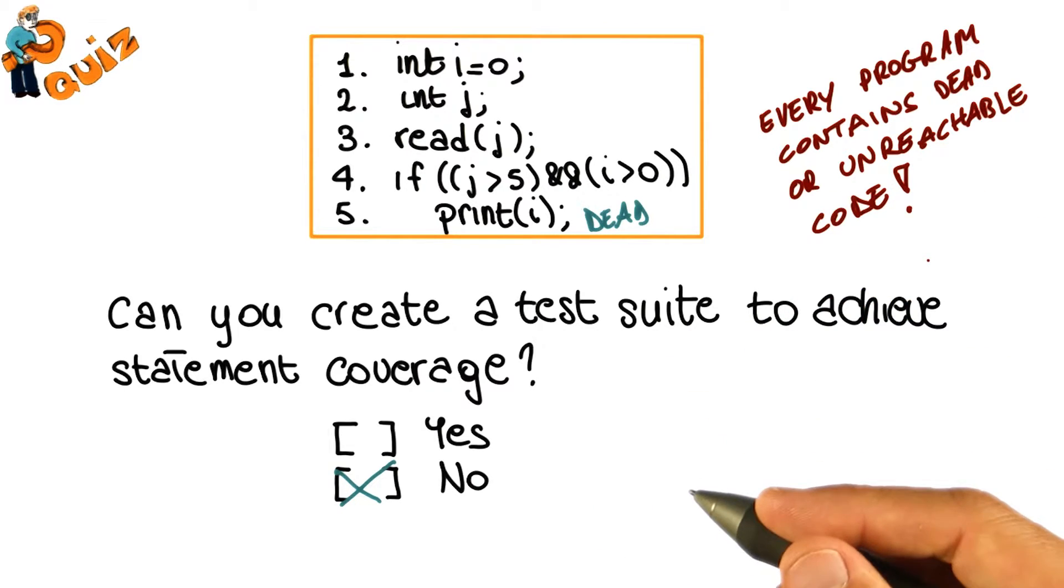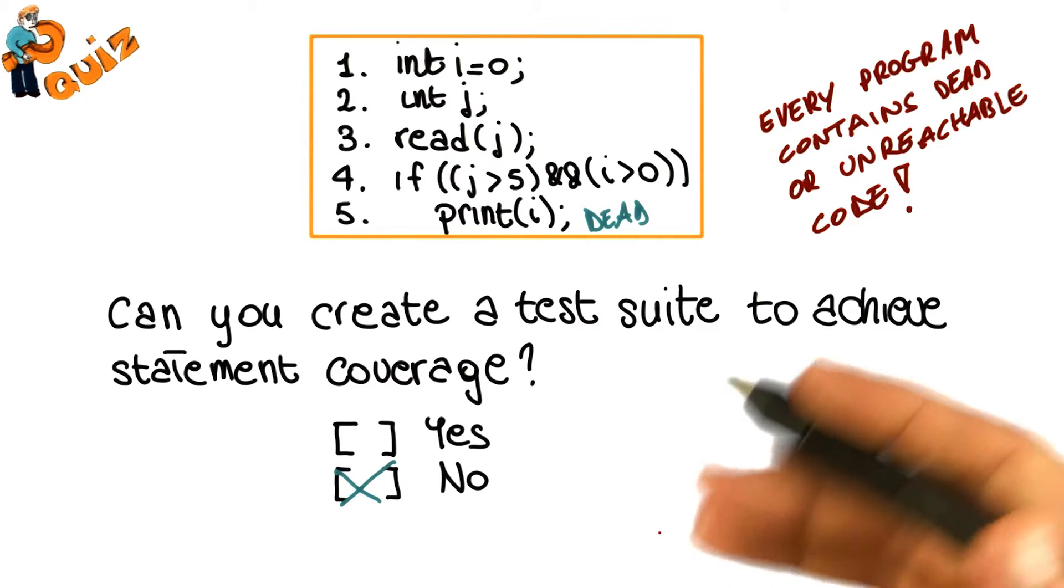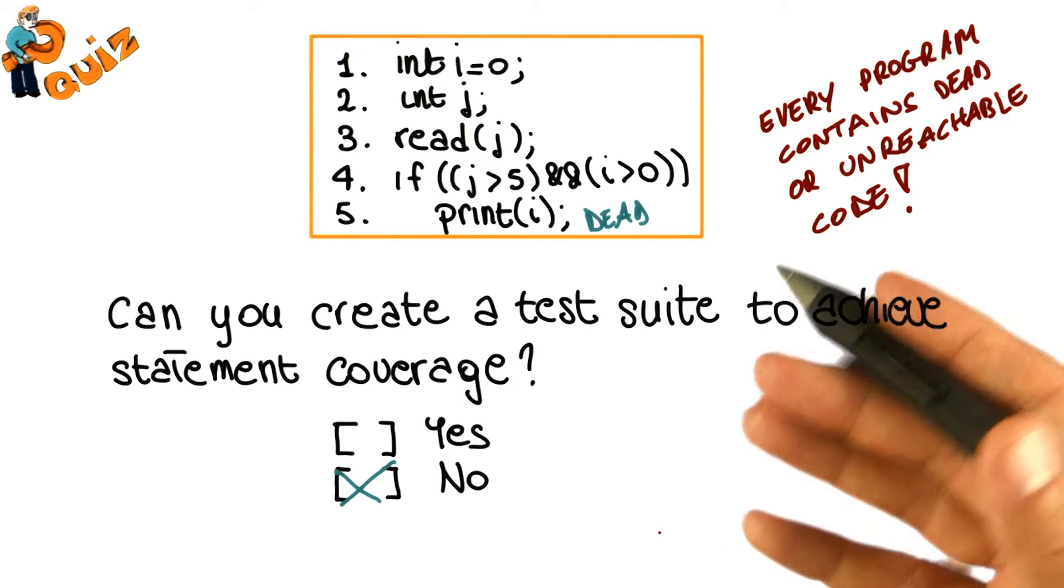And this is an important concept because this affects the very meaning of coverage measures. If there is some unreachable code, we will never be able to reach 100% code coverage.